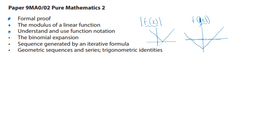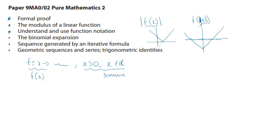Function notation: if we have f such that x maps onto whatever we're doing in our function, and x is bigger than zero and x belongs to the reals, this notation at the front is just the same as f(x). The part of the function describing what values of x can be inputted is the domain of the function. When we're looking at the range, that is the output.